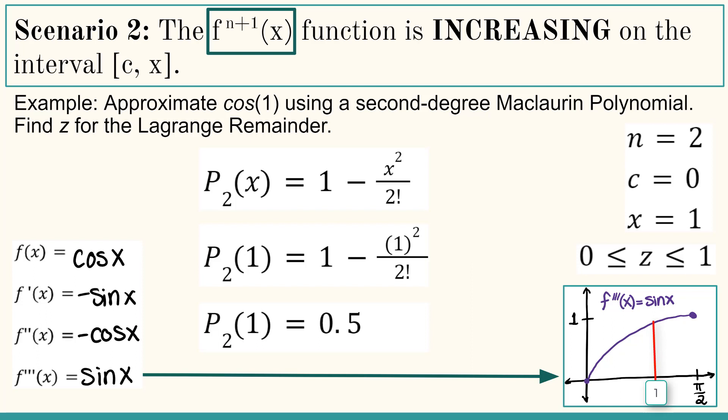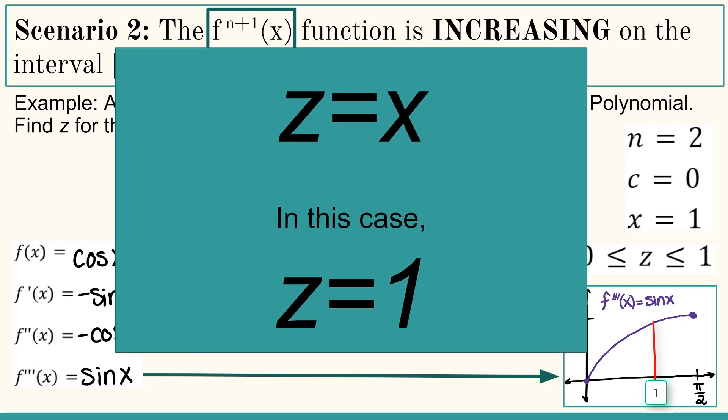When the n plus 1st derivative is increasing, then z is equal to x. And in this case, z equals 1, the right endpoint of the interval.